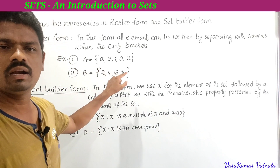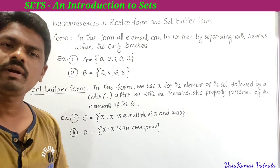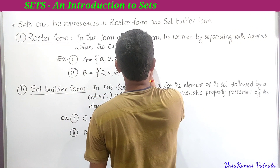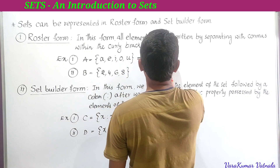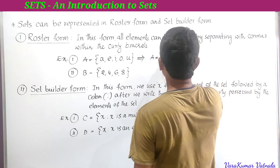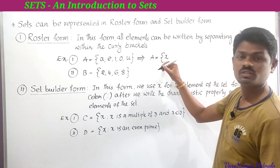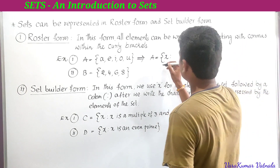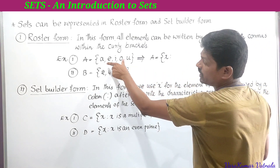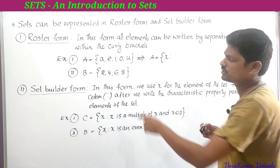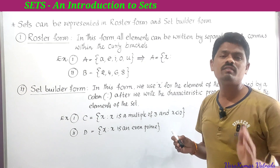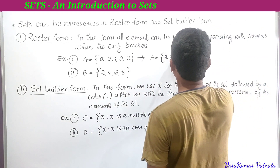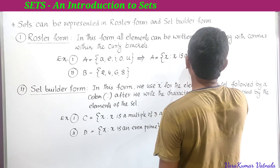Now for conversion from roster form to set builder form. Take A = {a, e, i, o, u}. Start with a curly bracket, write the element x, write colon, then observe all elements and write a characteristic property that all elements possess. Here a, e, i, o, u are vowels of the English alphabet. So: A = {x : x is a vowel of the English alphabet}.